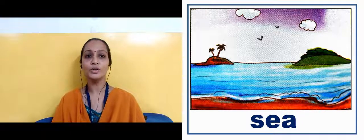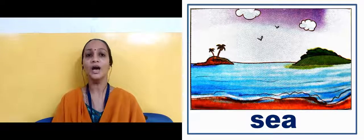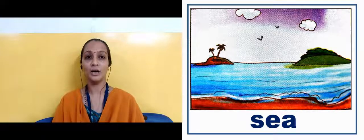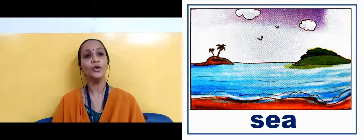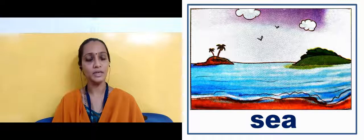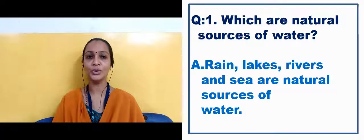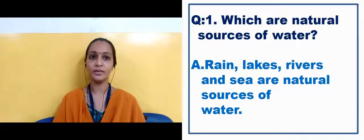Now in the next slide we can see river. River also gets filled due to rain — rain ki wajah se rivers fill hoti hai. Rivers have sweet water — river ka jo paani hota hai, woh meetha hota hai. There are so many rivers in India, for example Ganga, Yamuna, Brahmaputra. Aapne bhi koi nadi dekhi hogi — usse river kehte hai.